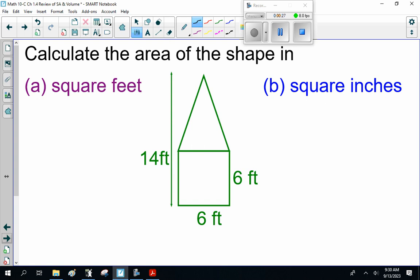Now, this is actually what we call a composite shape. It has two parts. It has a triangle, and it has a square. So, area of a square is length times width, which is 6 feet squared, which is 36 square feet.